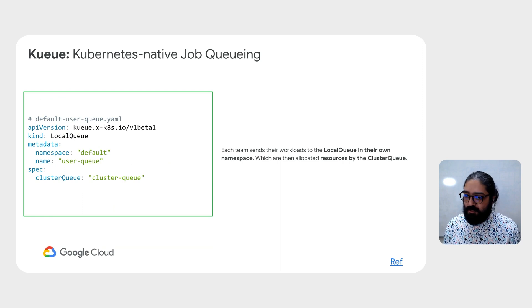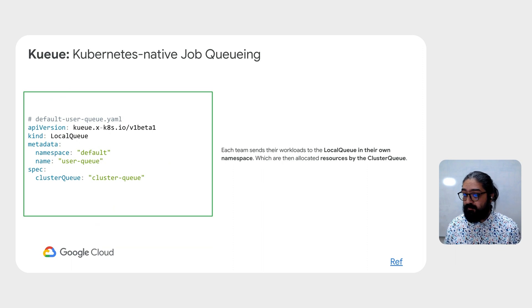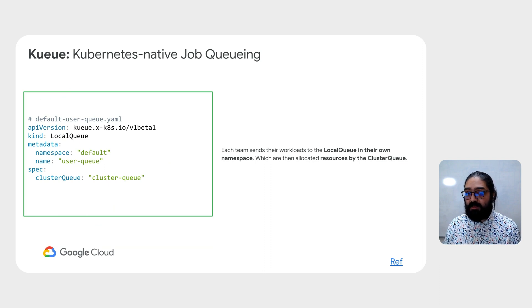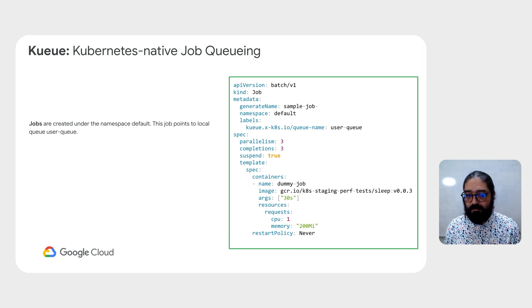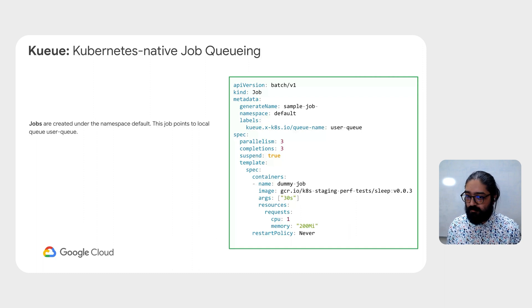A local queue is a namespace-scoped object where each team, in this model having their own namespace, sends their workload to the local queue in that namespace. These local queues are then allocated resources by the cluster queue that they are attached to. In this example, you'll notice that this particular job is created under the namespace called default, and it has a label that points to the local queue called user queue. This is what binds this job to go to a specific local queue that will be connected to other parts of Kueue for processing.